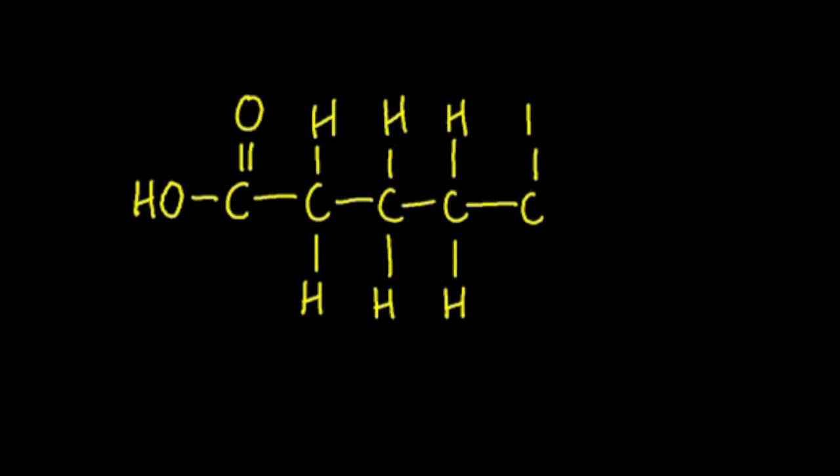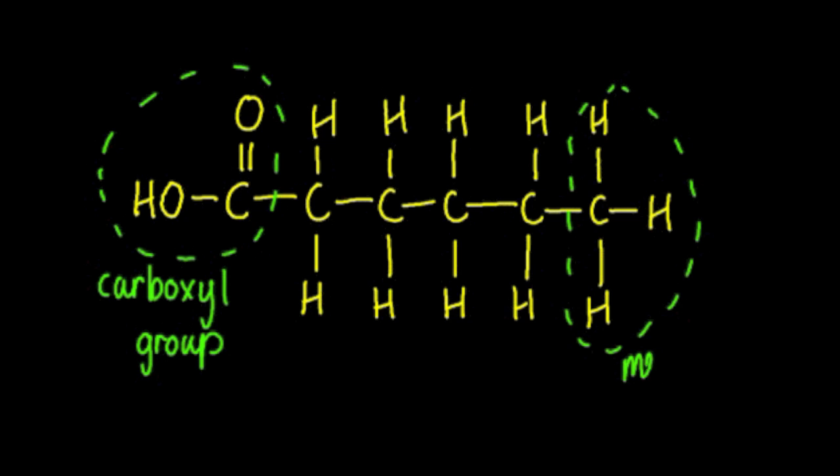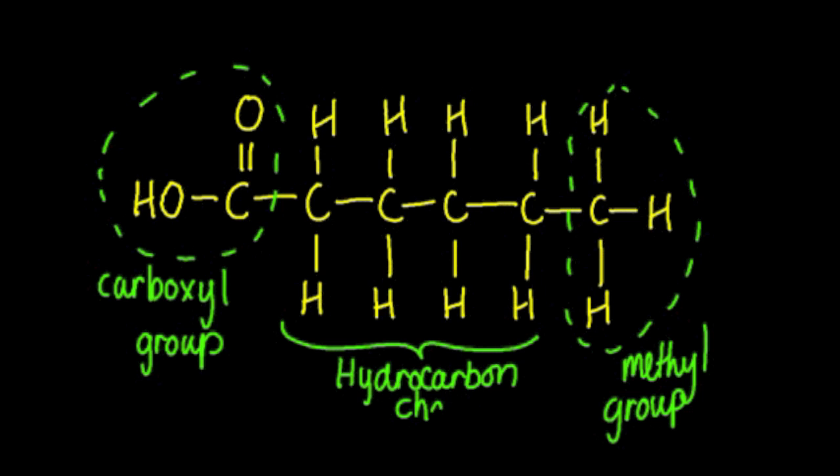When outlining the molecular structure of fatty acids, let's first look at the similarities. At one end of this structure you have a C double bond O-OH group known as the carboxyl group. At the other end you have the CH3 group known as the methyl or sometimes omega group. And in the middle you have the hydrocarbon chain.